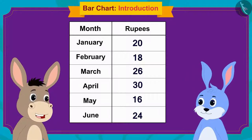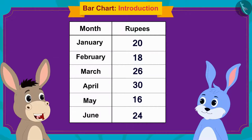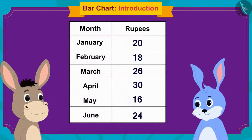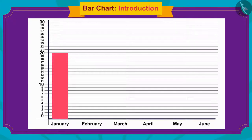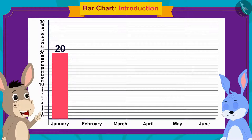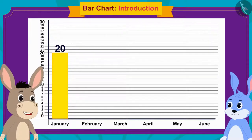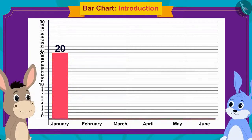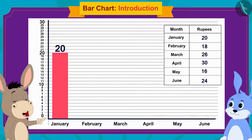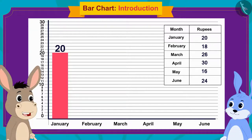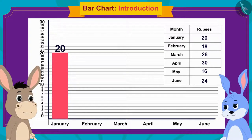Bholla wrote the numbers from 1 to 30, equally spaced, on the vertical line. He asked Bunny how much money he saved in January. Bunny answered 20 rupees. Bholla then made a thin rectangle over the month of January, with its length going up to the number 20 on the vertical line. He explained that thin rectangles must be drawn for each month's savings, with the length matching the amount saved.